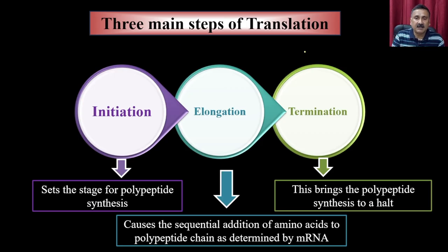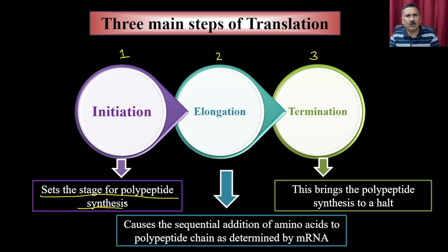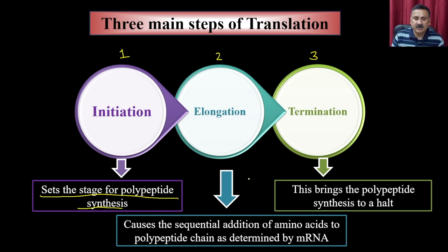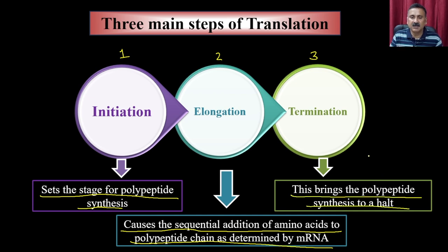Translation in eukaryotes involves 3 important events: initiation, elongation, and termination. Initiation sets the stage for polypeptide synthesis by assembling all protein components and ribosomes, bringing the raw materials together. Elongation causes the sequential addition of amino acids to the polypeptide chain as determined by the codons on the messenger RNA. Termination brings polypeptide synthesis to a halt when the ribosome reaches a stop codon.